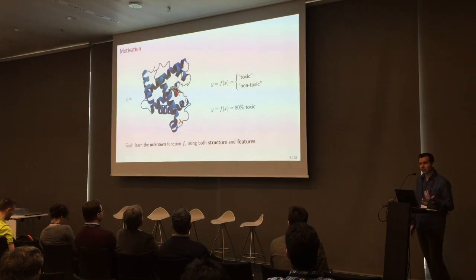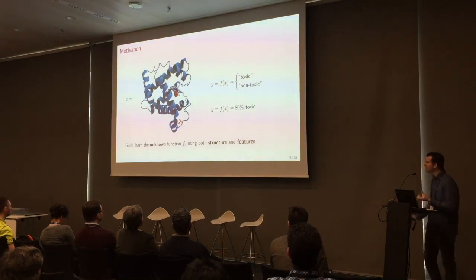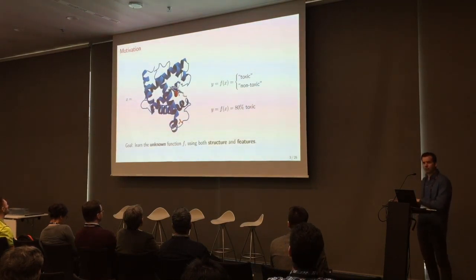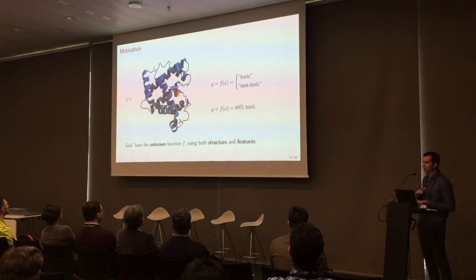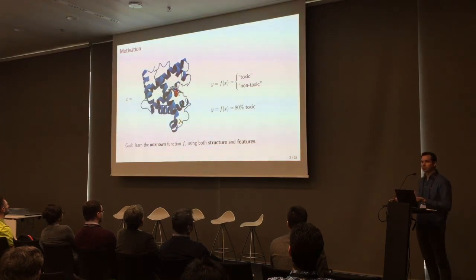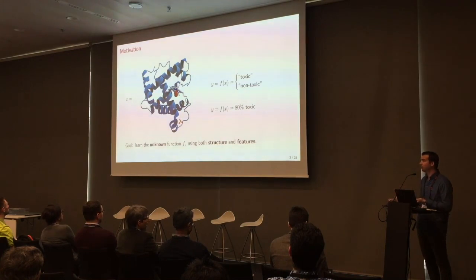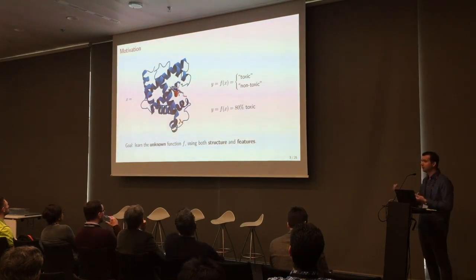The motivation for this talk is that in traditional machine learning, you give the machine a set of features. For each user, you tell it their age, location, profession, and the machine says: give credit or don't give credit. Simple.